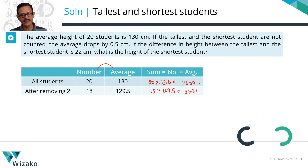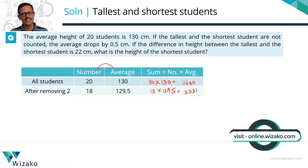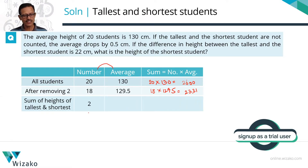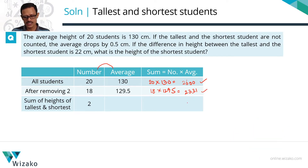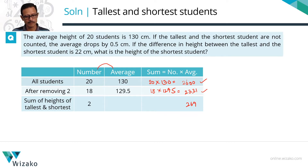So for all 20 students the sum of heights is 2600. For 18 out of these 20, the sum of heights is 2331. So the height of the remaining two students — the tallest and the shortest — will be the difference between these two, which equals 269. That is the sum of the heights of the tallest and the shortest student.